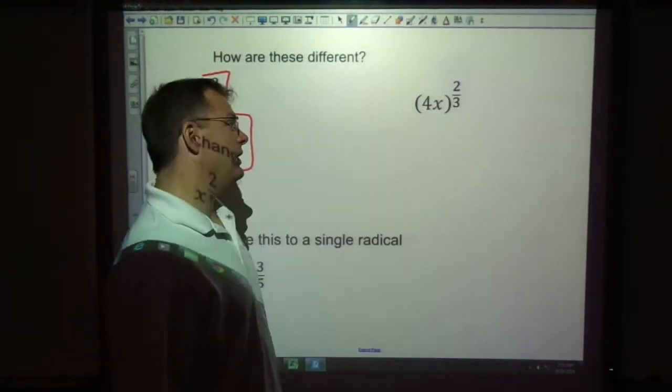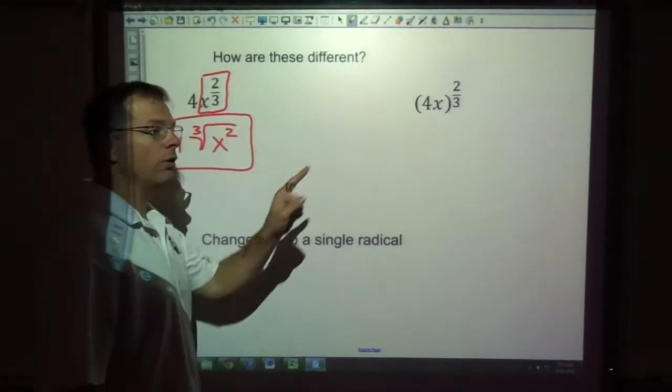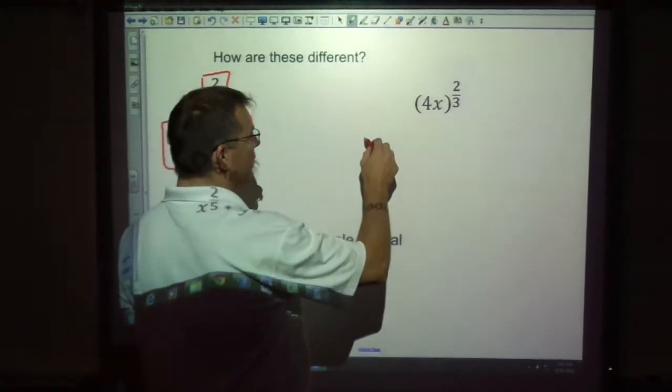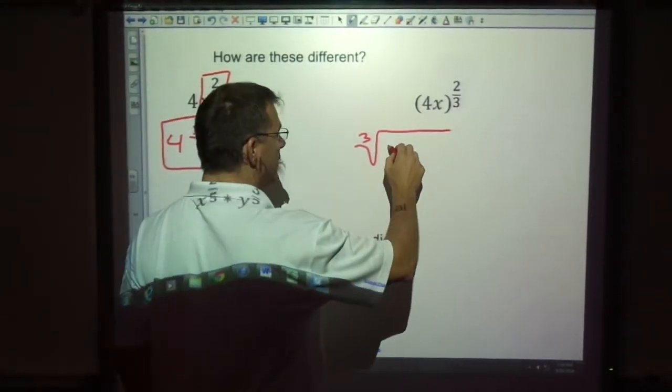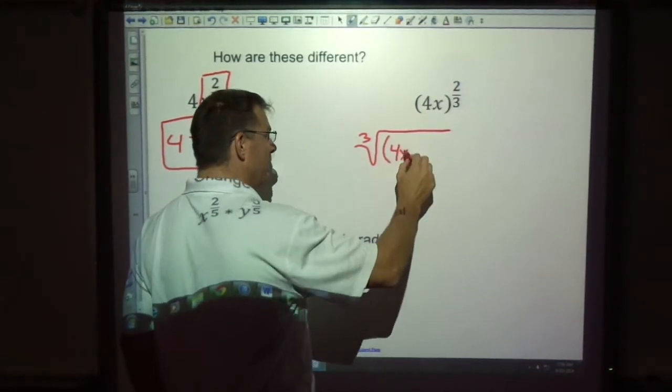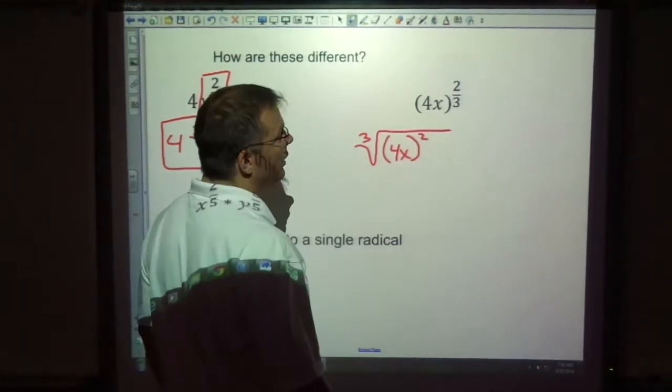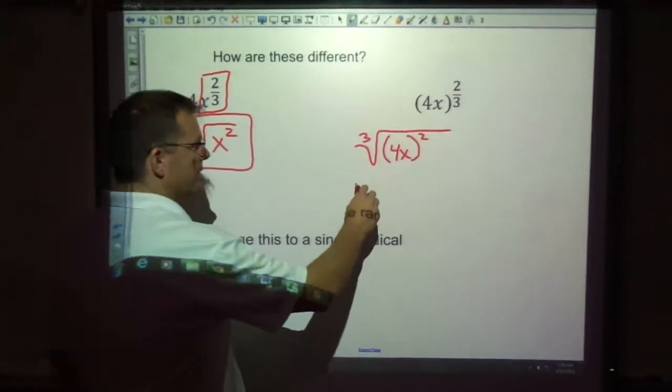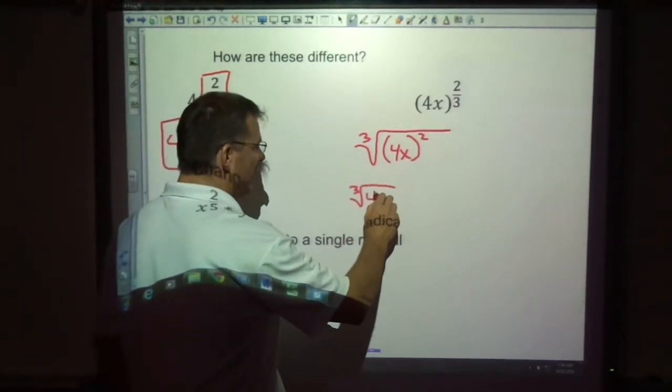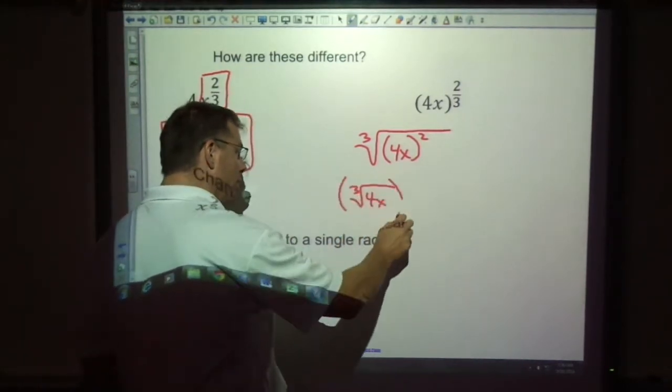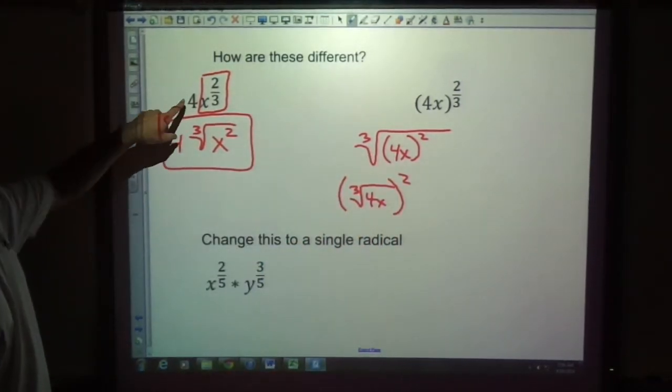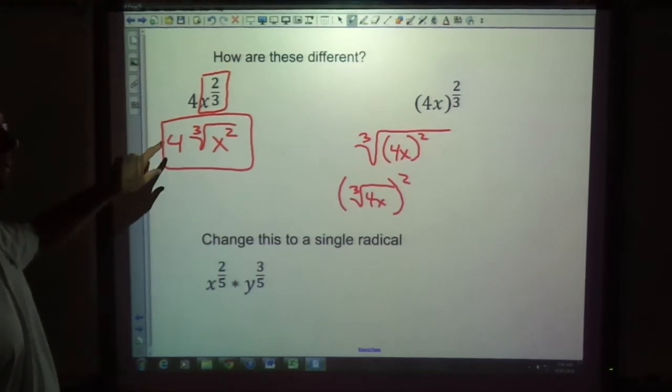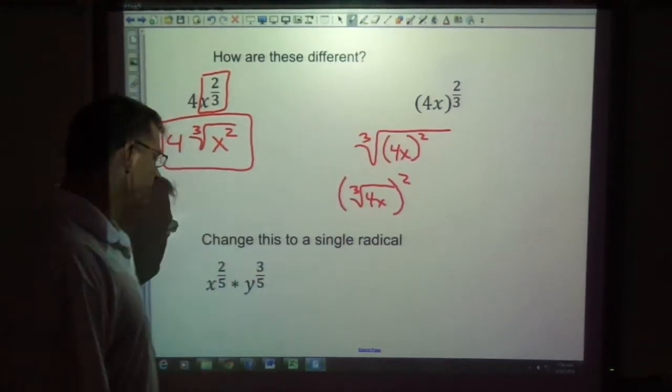But in this one, it's all being raised to the two thirds power, so the four is part of the radical. For example, we would say the cube root of all of this, four x being squared. Or we could write it as cube root of four x all squared. We know those two forms are equivalent. But in this one, the four is not part of the radical, so don't put it in. In this part, it is.